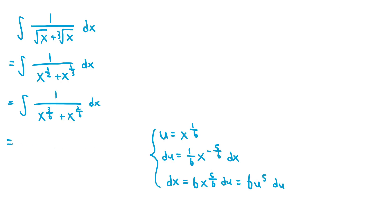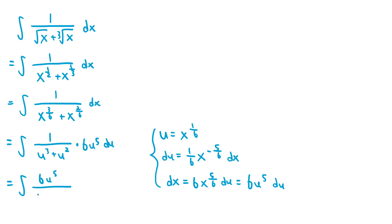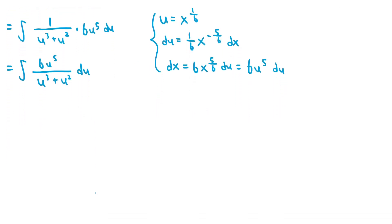So this becomes the integral of 1 over u cubed plus u squared, since x to the power of 3/6 is just x to the power of 1/6 all raised to the power of 3, and x to the power of 2/6 is x to the power of 1/6 all raised to the power of 2. Since dx equals 6u to the power of 5, du, we multiply to get the integral of 6u to the fifth divided by u cubed plus u squared, du. We can then divide both numerator and denominator by u squared, giving the integral of 6u cubed over u plus 1, du.